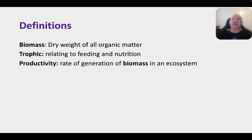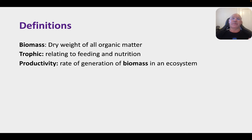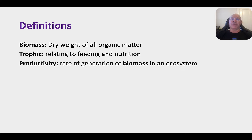First, some definitions. Biomass comes up again and again — basically it's about the amount of organic matter in the system, in the ecosystem or in the food chain, but we're talking about the dry weight of it, so it doesn't include water. Trophic means feeding or nutrition, so we talk about trophic levels as the feeding levels. And productivity in ecology is the rate of generation of biomass in an ecosystem.